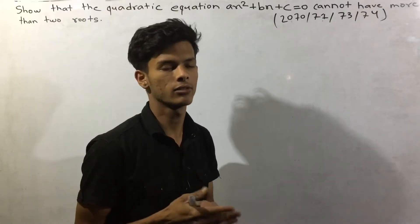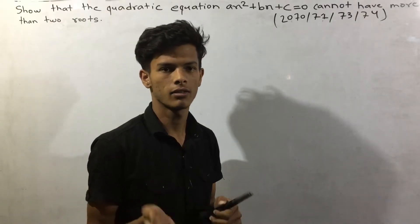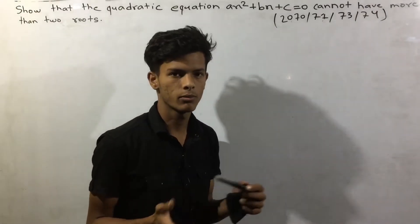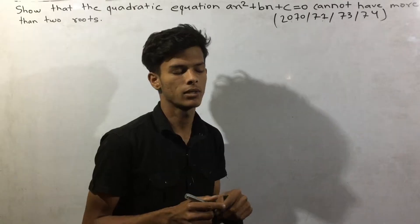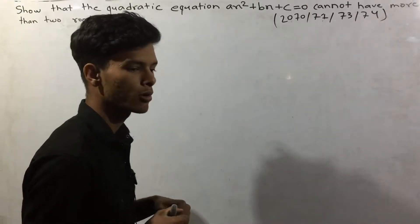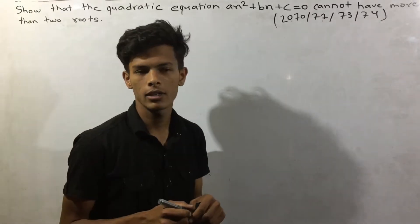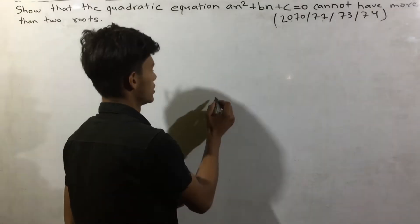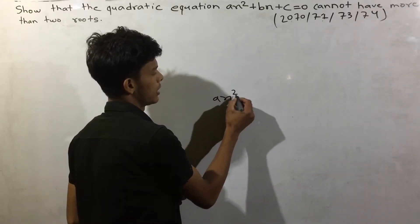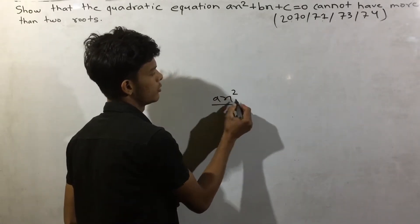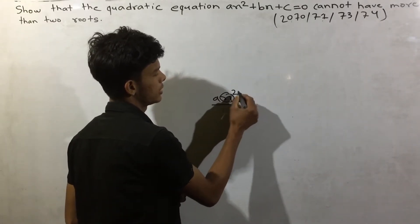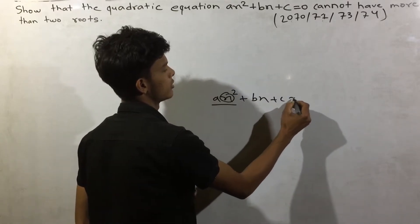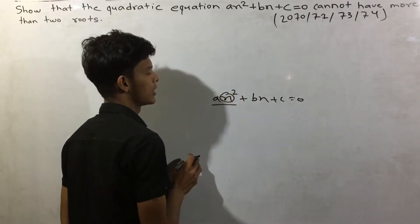I am going to talk about quadratic equations. There is one equation for X — it seems to be a square. This equation has terms plus B, and this equation is as well.